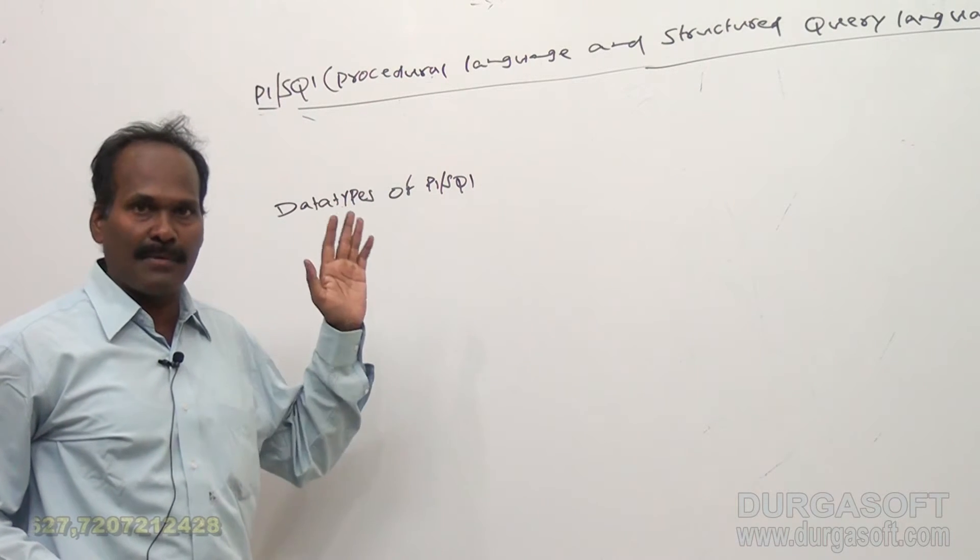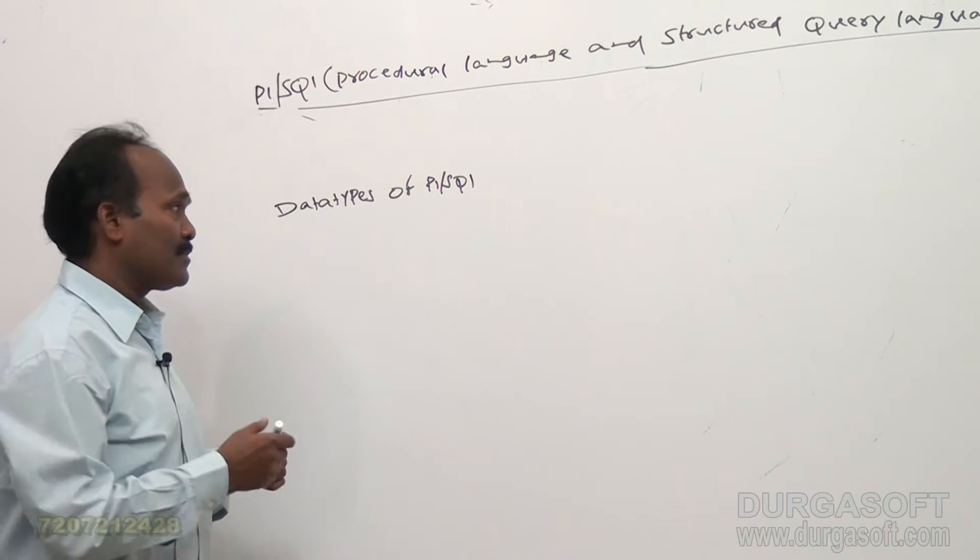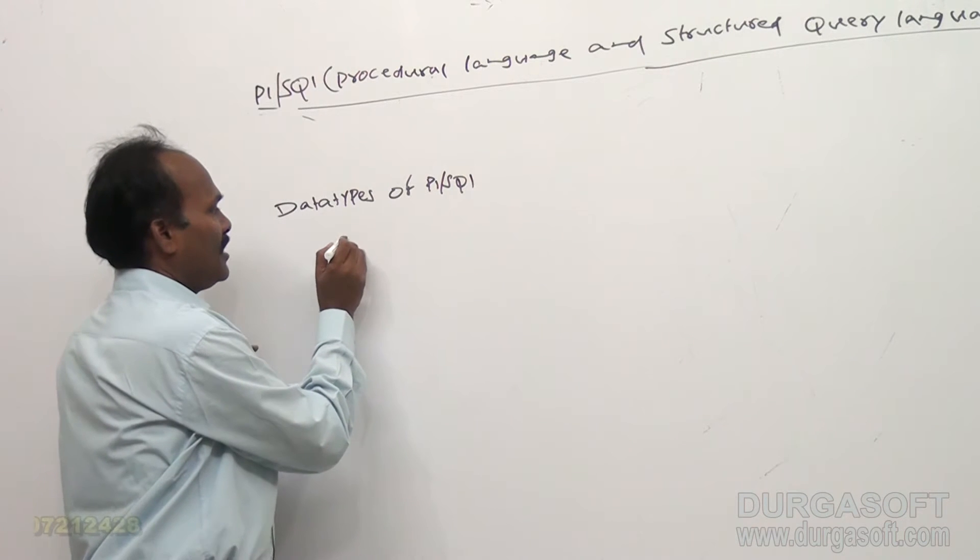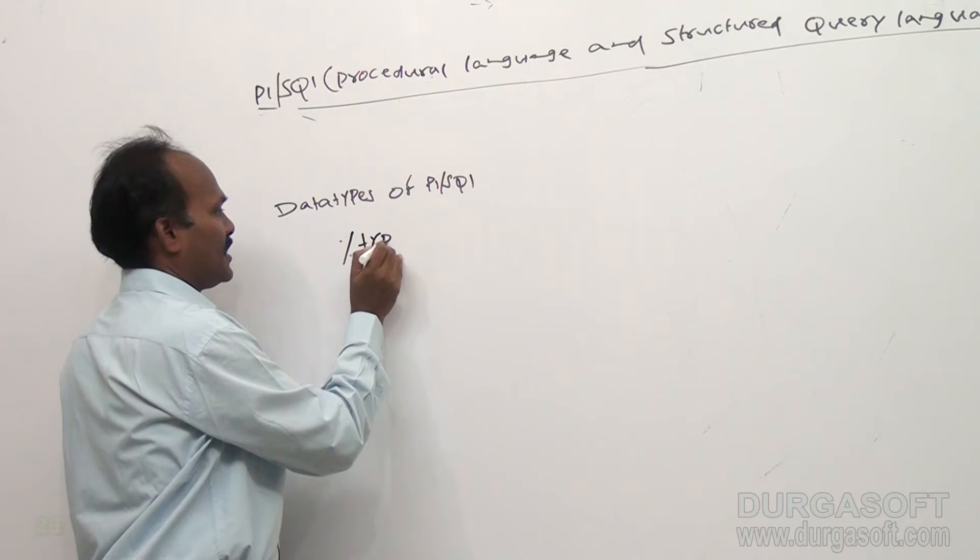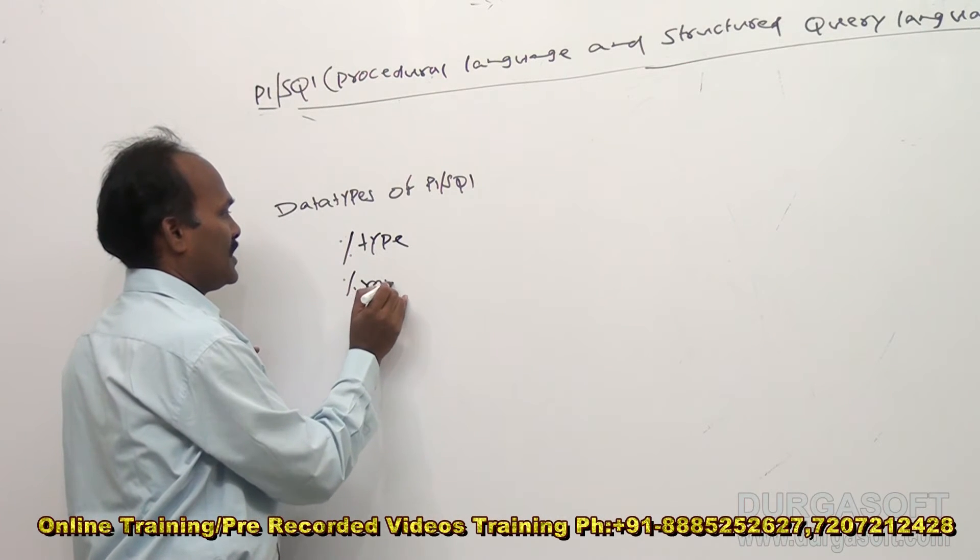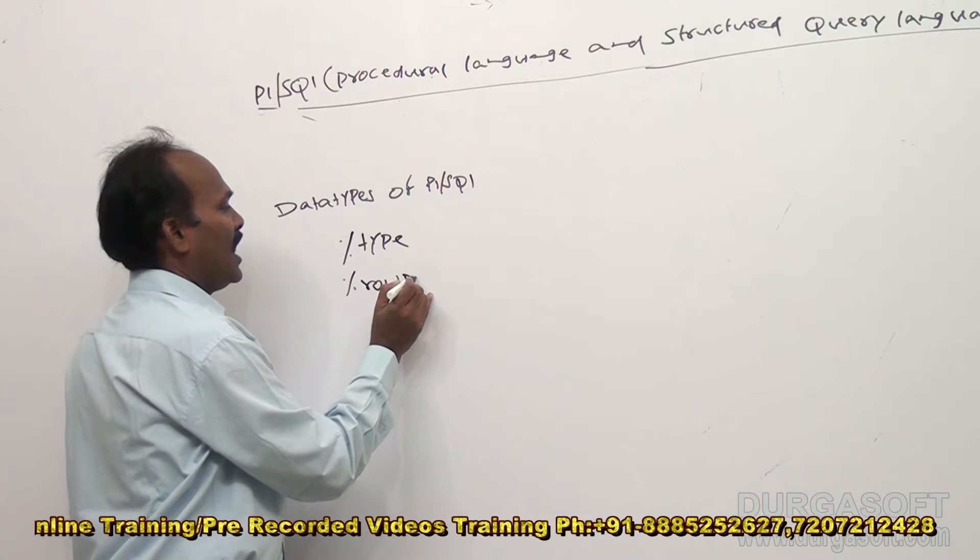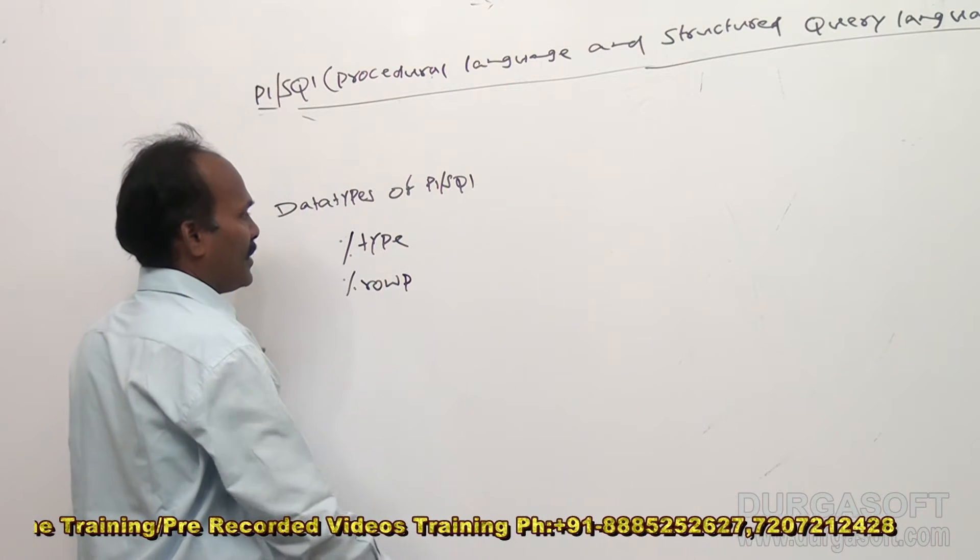So apart from all those SQL data types, it also supports two more data types. What are the types here? One is percentage type and percentage row type variable. These are especially new types in PL/SQL.